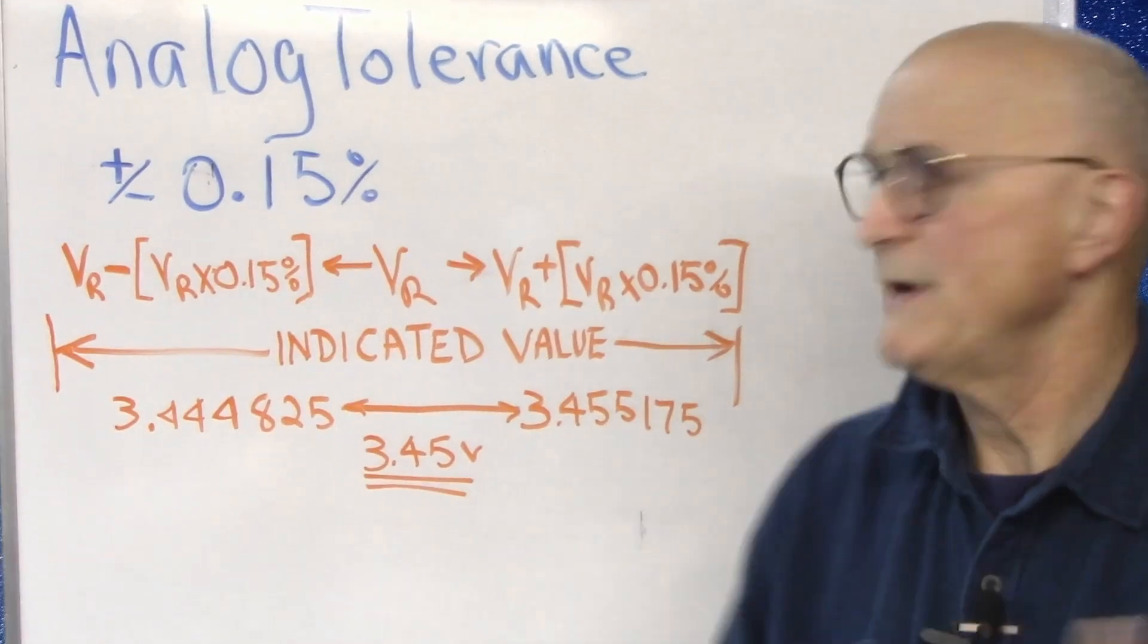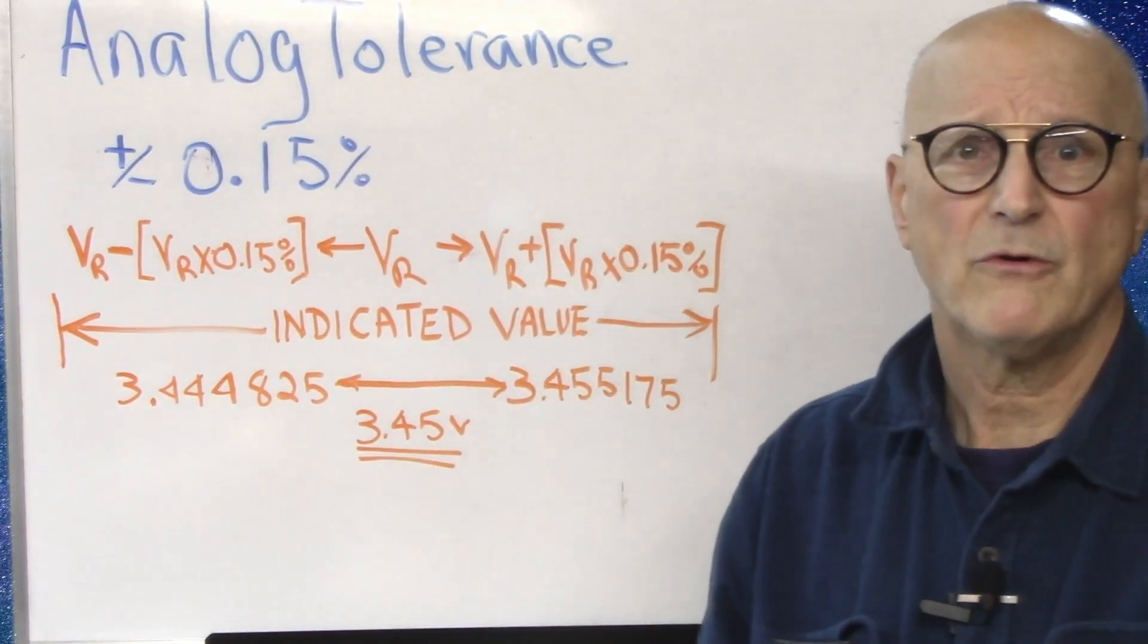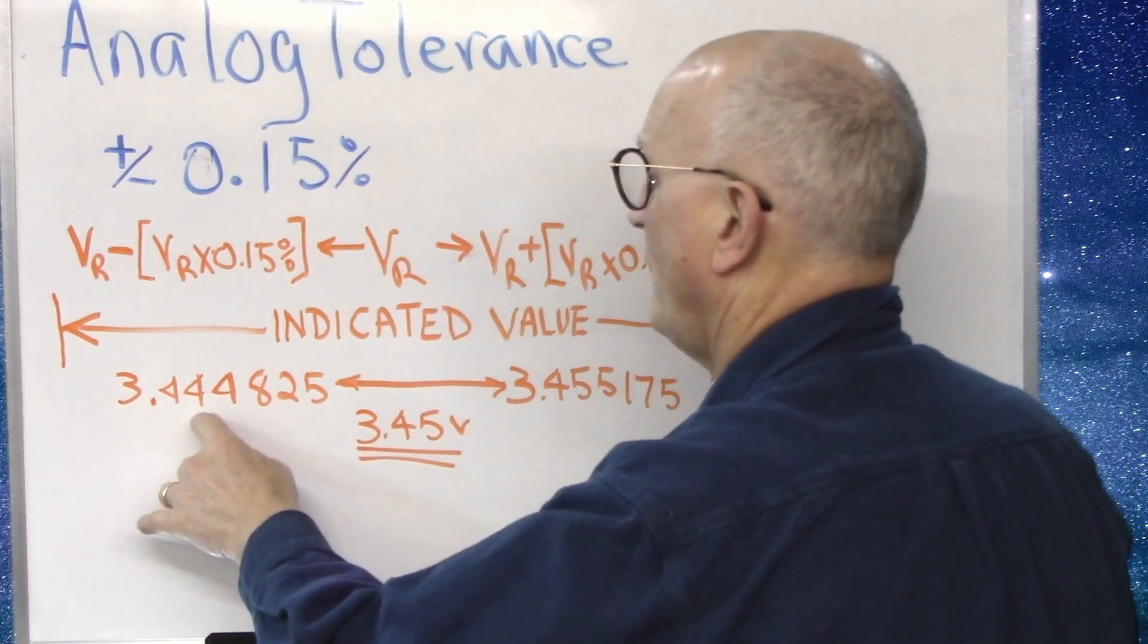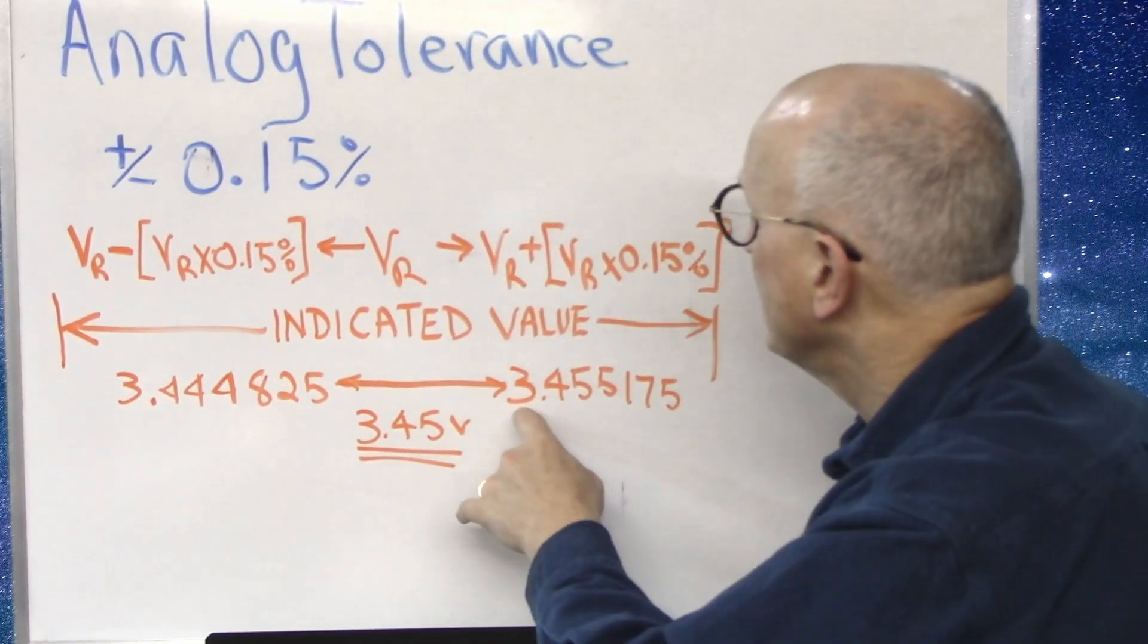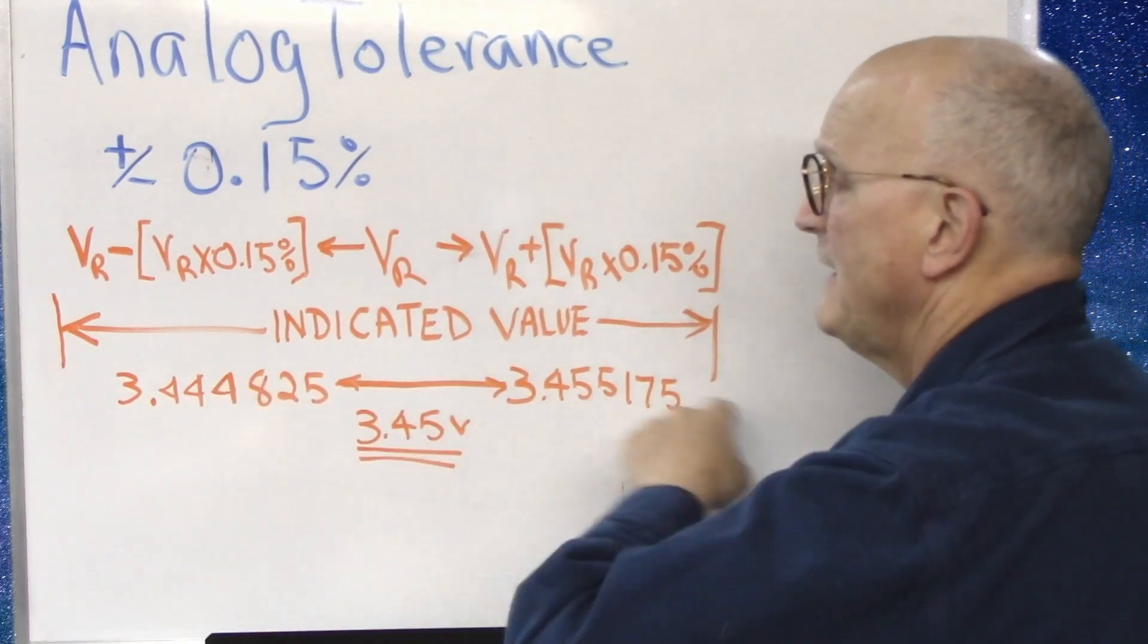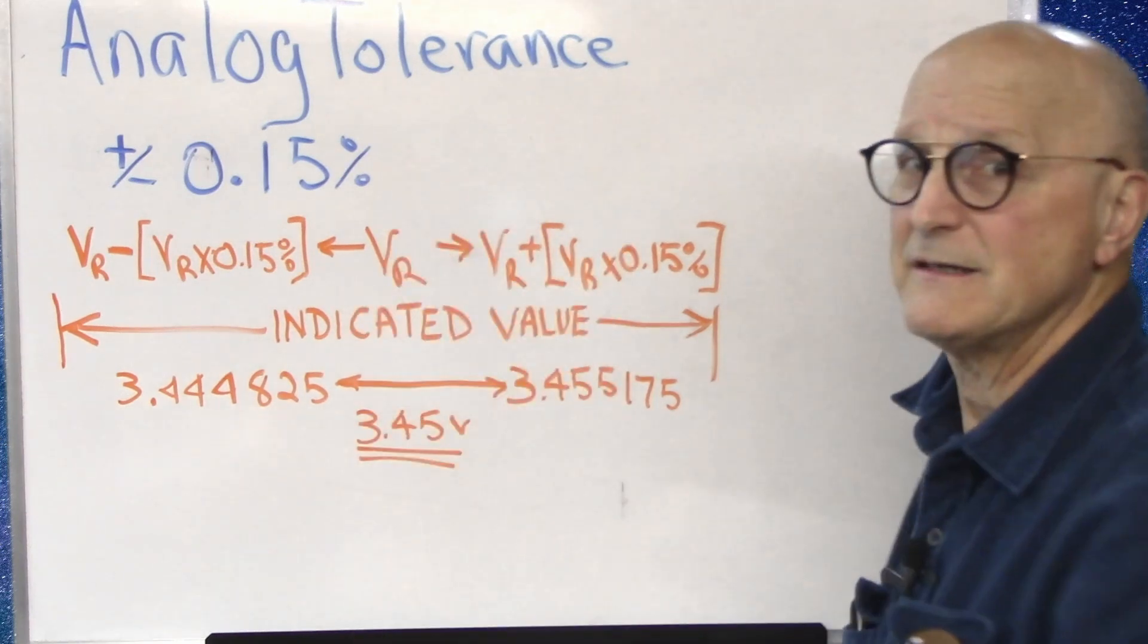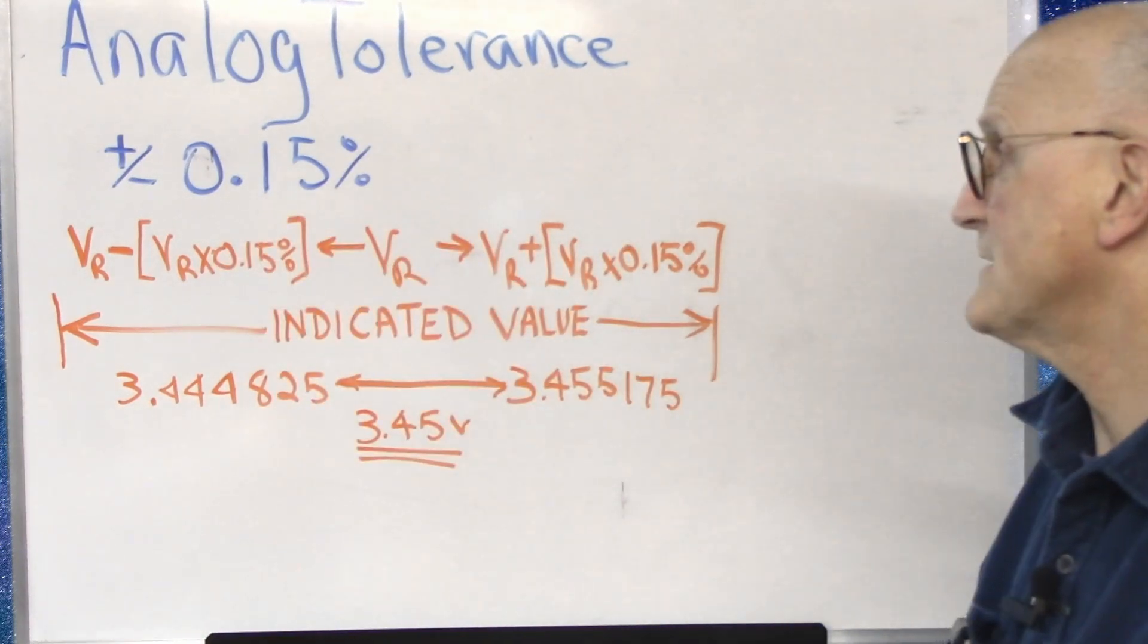So suppose we're measuring a 3.45 volt signal. Our meter could tell us that this is a 3.444825 volt signal, or it could indicate 3.455175, anything in between these values and still be within its tolerances of plus or minus 0.15 percent.